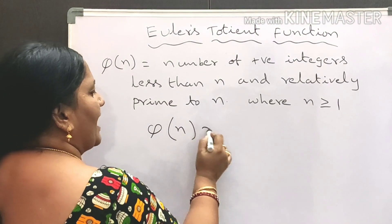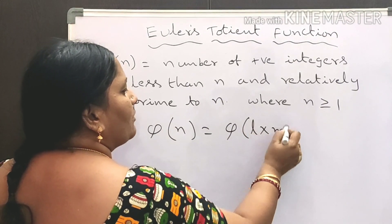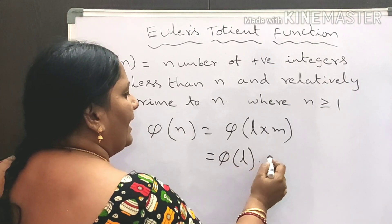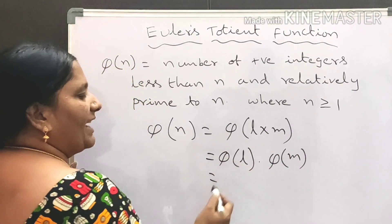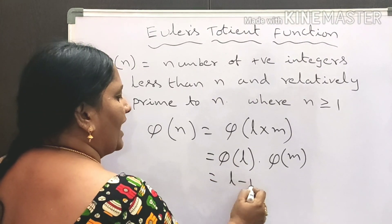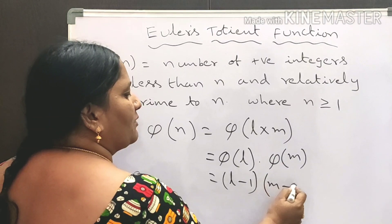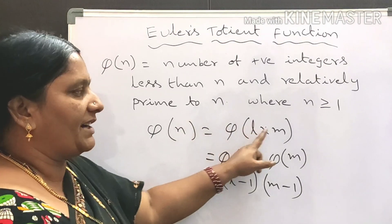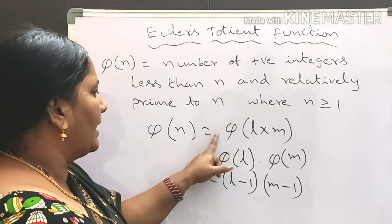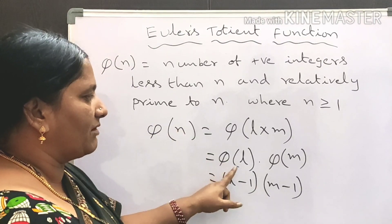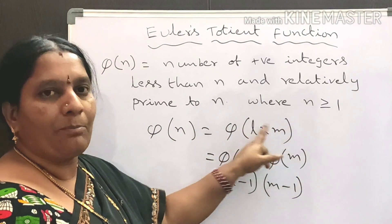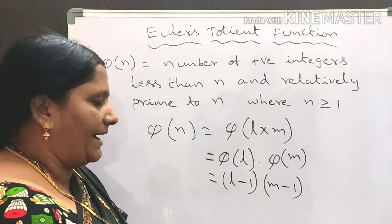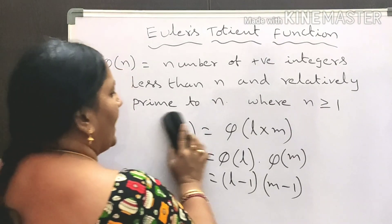Whenever we take a composite number, we can write it as a product of primes. For example, phi of n, where n equals l times m and l and m are prime numbers, equals phi of l times phi of m. Since phi of l equals l minus 1 and phi of m equals m minus 1, the Euler-Totient function of the composite number equals (l minus 1)(m minus 1).